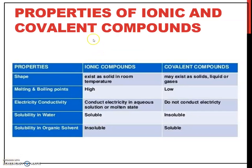Properties of ionic and covalent compounds. For ionic compounds, you can see that for the physical state, it exists as a solid. But for covalent compounds, it can exist as solid, liquid, or gas. For ionic compounds, it has high melting and boiling point. For covalent compounds, low melting and boiling point.